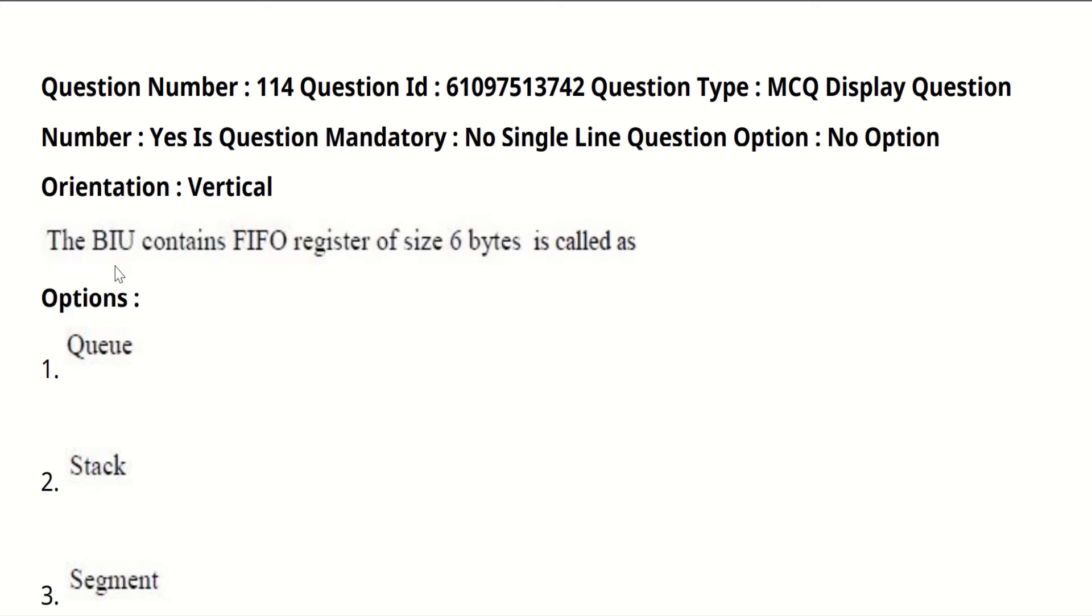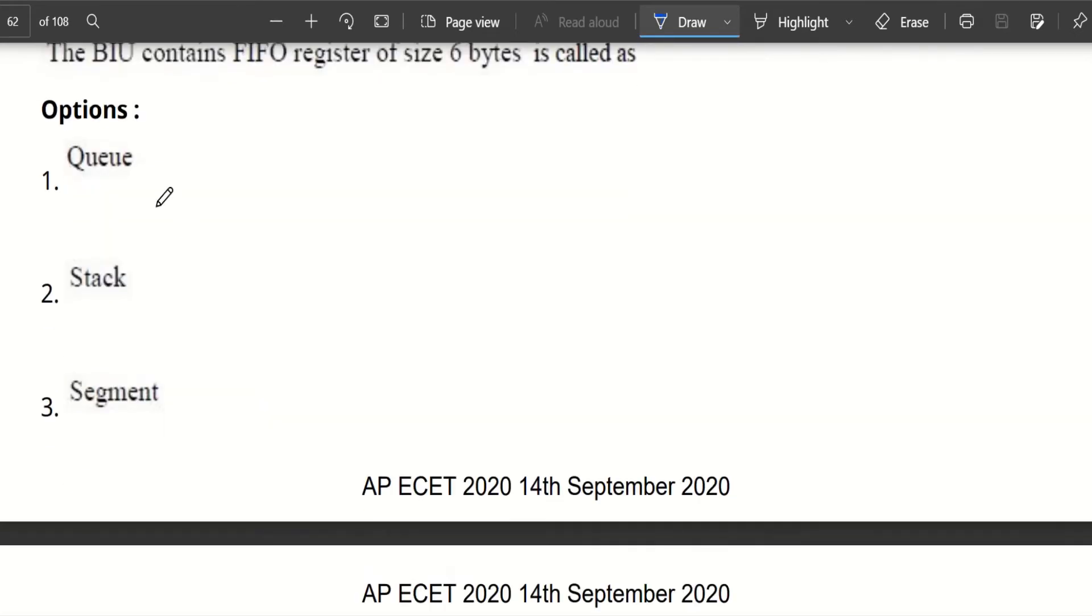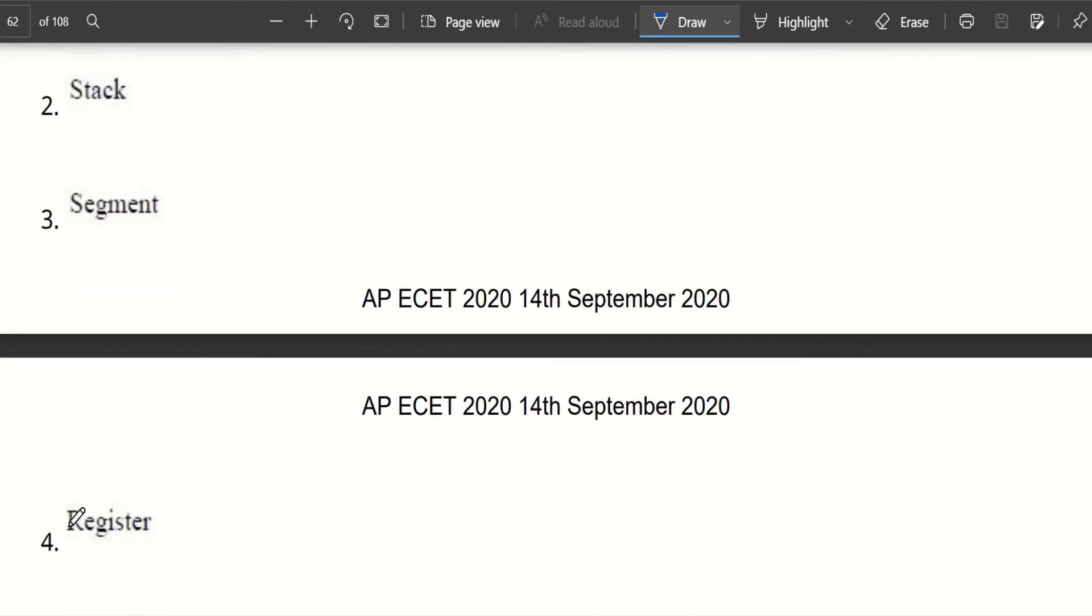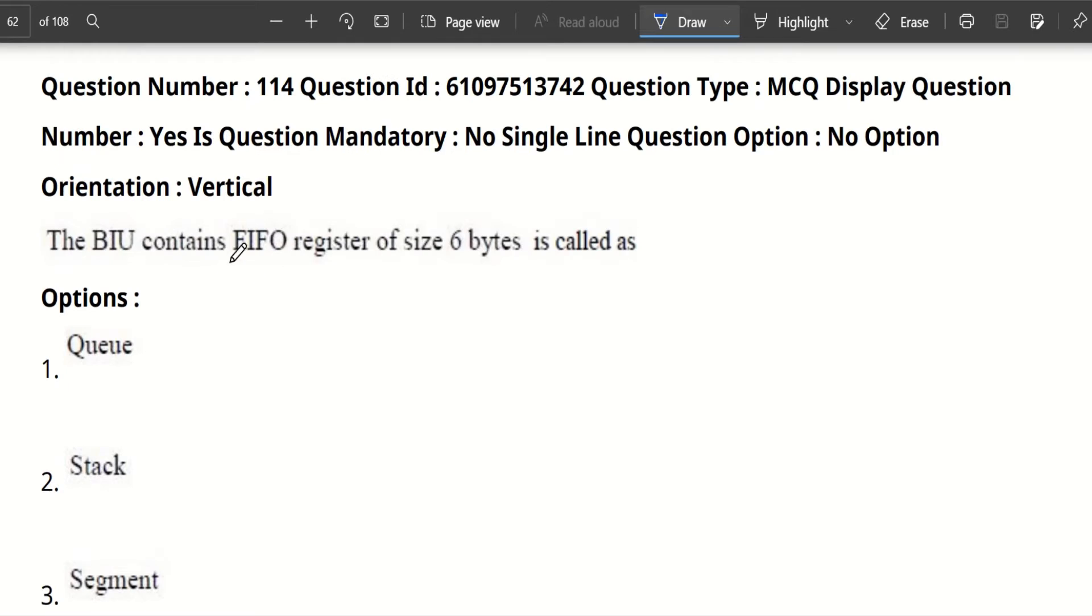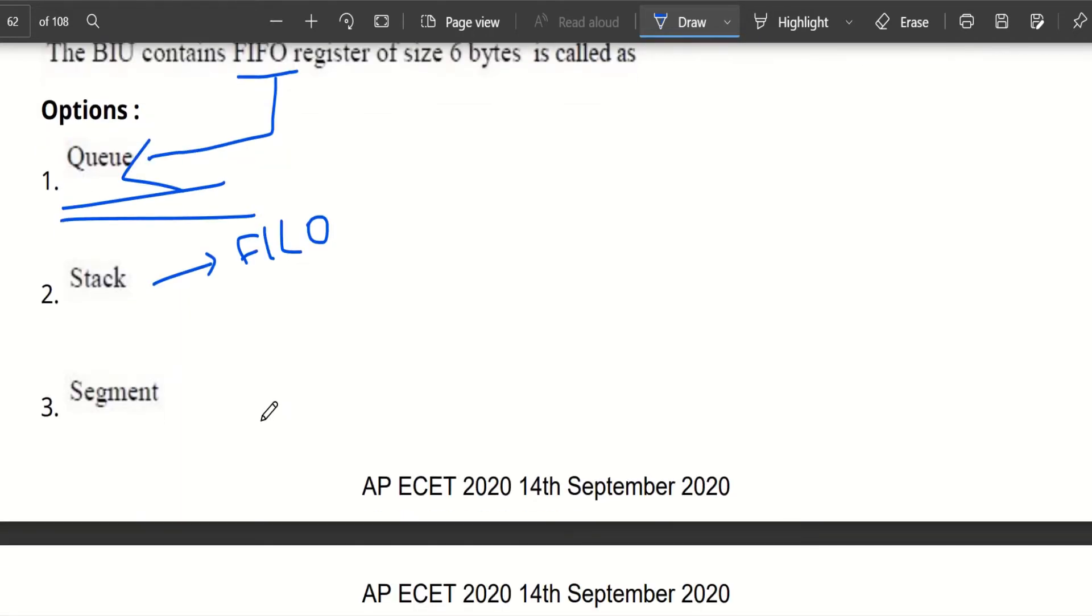The BIU bus interface unit contains first in first out register of size 6 bytes is called as. Now let's go through the options: Queue, Stack, Segment, Register. Here it is given first in first out. First in first out always refers to the Queue. So the answer is Queue. Stack refers to first in last out, FILO. Remember this. Now let's move to our next question.